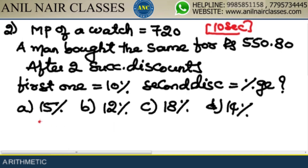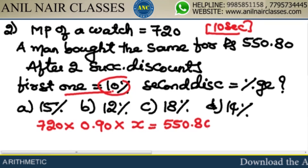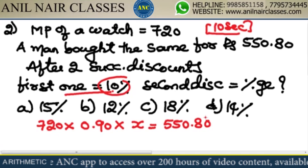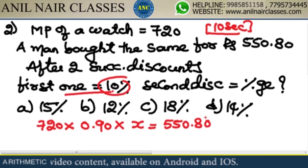Initially the price is ₹720. The first discount is 10%, which means it becomes multiplied by 0.90. The second discount I don't know, but the final value became ₹550.80. This is the equation: 720 × 0.9 × ? = 550.80.